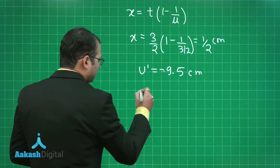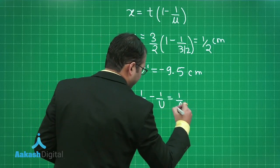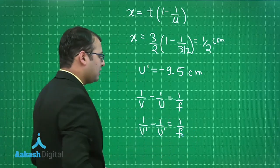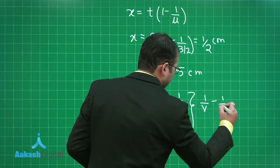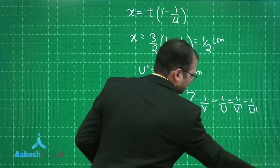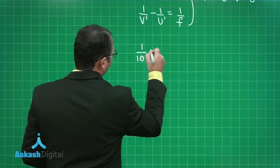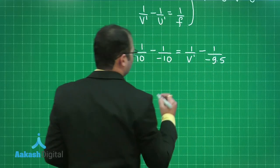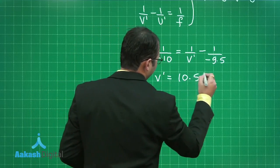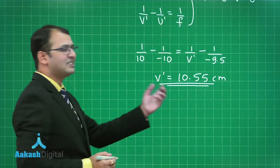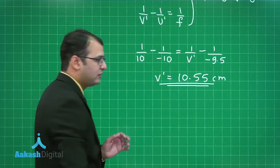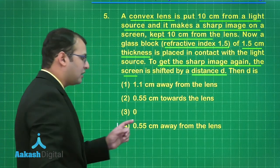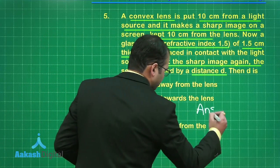Now as per the previous equation, 1 upon V minus 1 upon U was equal to 1 upon F. Also 1 upon V dash minus 1 upon U dash should be equal to 1 upon F. Seeing to the two equations, we can equate the left hand side of both and I'll obtain 1 upon V minus 1 upon U is equals to 1 upon V dash minus 1 upon U dash. Now just put down the values here, you will get 1 upon 10 minus of minus 10 is equals to 1 upon V dash which I don't know minus of minus 9.5. On solving this you will get V dash is equals to 10.55 centimeter approximately and it is in plus. That means the image will be shifted to the right hand side. Let's see here which is the best suited option. So as per the options available 0.55 centimeter away from the lens is the best suited answer here. Answer to this question would be option 4.